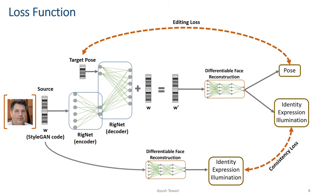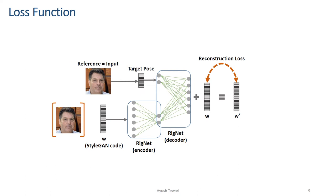Directly computing losses in parameter space requires careful weighting of the different dimensions. Instead, we design these loss functions in the image space using a differentiable renderer to automatically weigh the different dimensions. Finally, we also add a reconstruction loss which ensures that the output does not change when the target parameters are the same as in the source input.